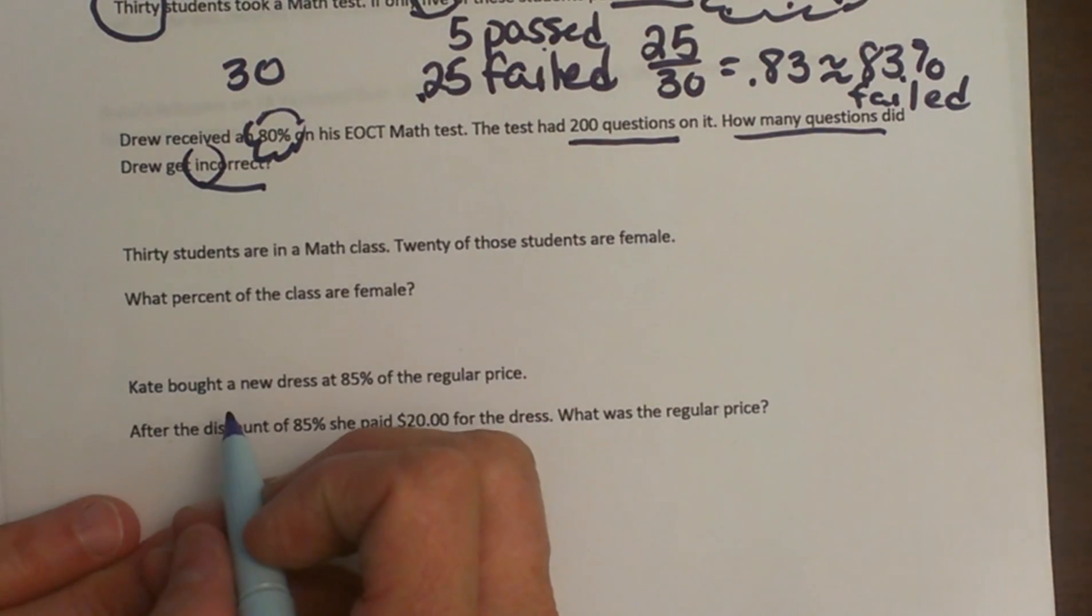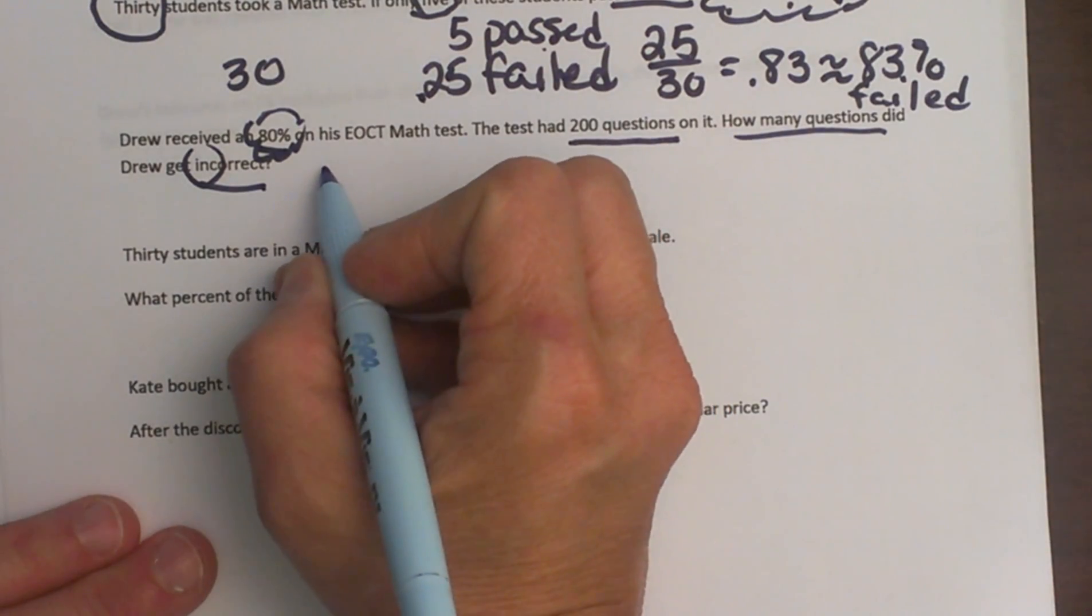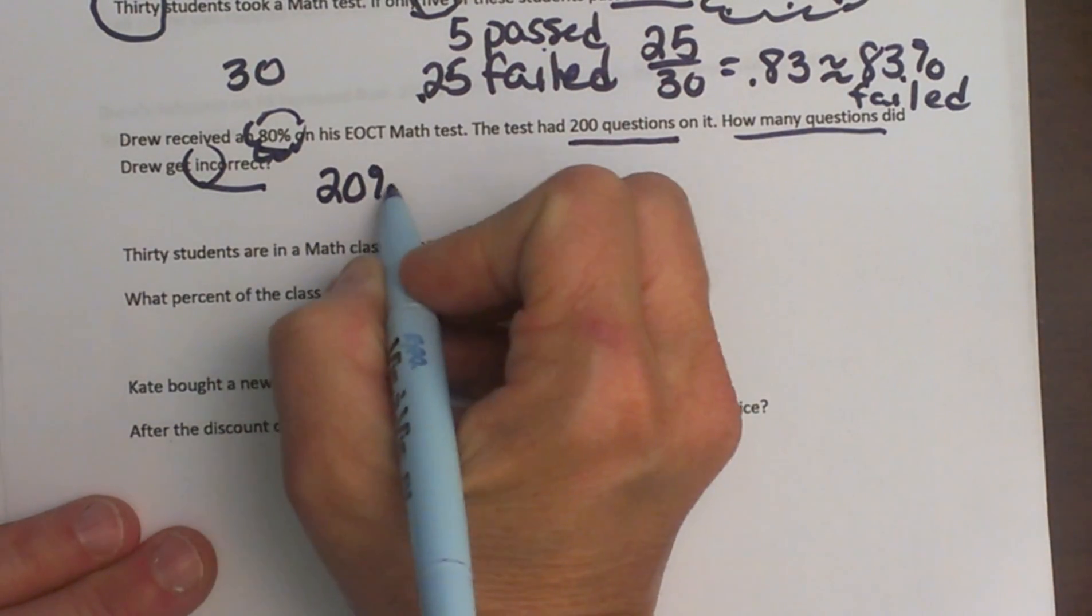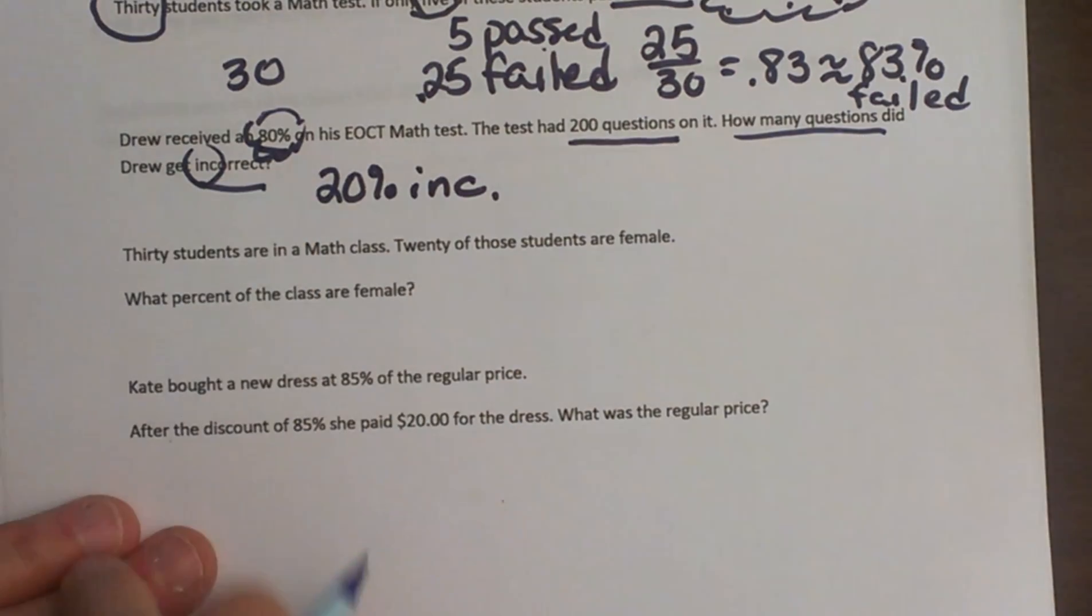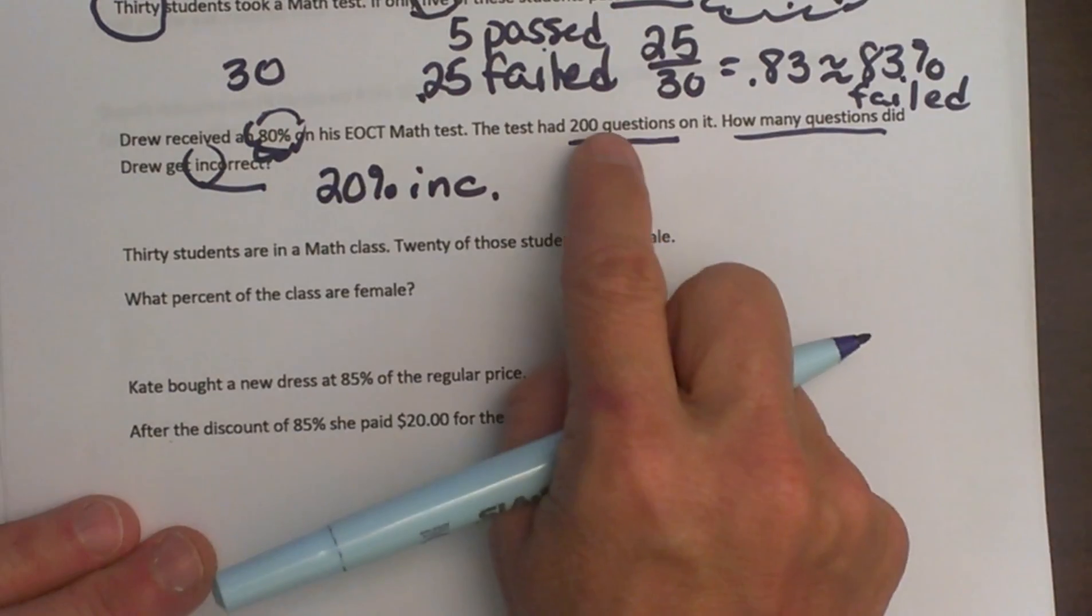So how many did he miss? Well, if he got 80% correct, that means he got 20% incorrect. Because he made an 80 on the test, so 100 minus 80 is 20. Now what is 20% of 200?